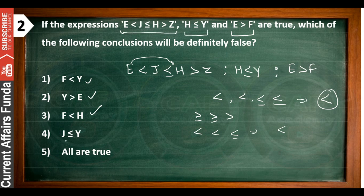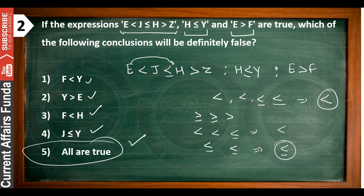Let's also check F to E to H: F to E gives lesser than, and E to H gives lesser than or lesser equal — highest precedence is lesser, so this is also true. And for the next one — going to J from E, then E to H gives lesser equal, and H to J gives lesser equal — ultimately lesser equal. So all of these come out to be true — all are true. Fine.